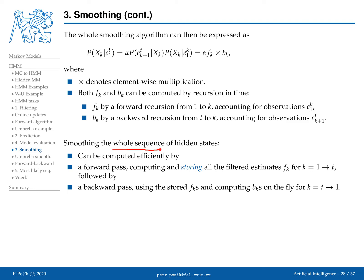To smooth the entire sequence efficiently, you run a forward pass first, storing all filtered estimates from time one to t. Then you run a backward pass from time t down to time one, computing backward messages on the fly, multiplying them with the corresponding forward messages, and normalizing to get the smoothed probability distribution at each time step.